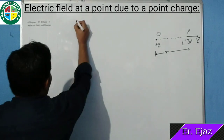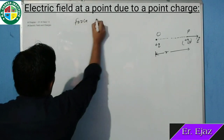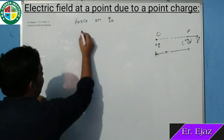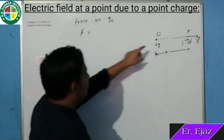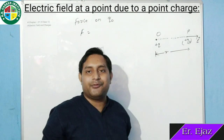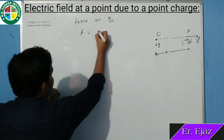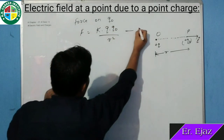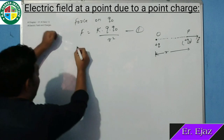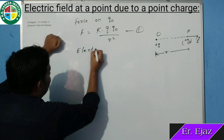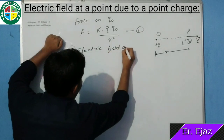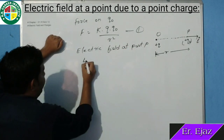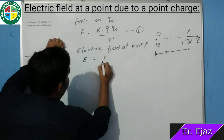सबसे पहले बताओ, force on Q naught — Q naught पर कितना force experience हो रहा है? Coulomb's law से आपने देखा कि 2 charges के लिए electric force किस तरीके से calculate करते हैं। तो F equals क्या होगा — K, Q, Q naught upon R square. यह first equation है। अब electric field कितना होगा — E equals F upon Q naught.